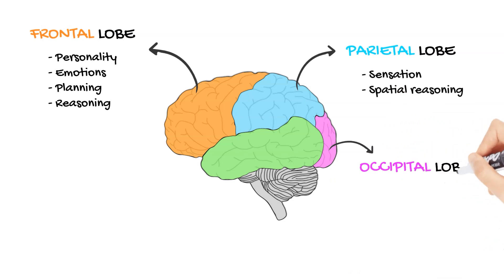Tucked at the back of the skull, the occipital lobe is our visual processing powerhouse. Every color, shape, and movement we see is interpreted here. It's like the brain's own movie projector, translating light into the rich tapestry of visuals we experience every moment.